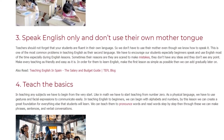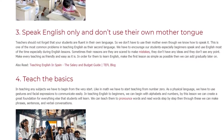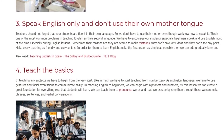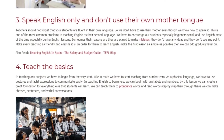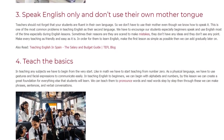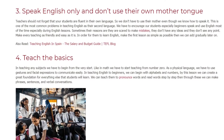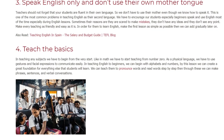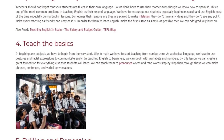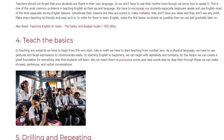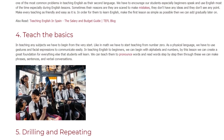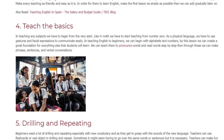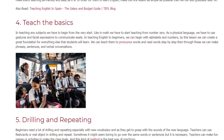Tip 4: Teach The Basics. In teaching any subject, we have to begin from the very start — like in math, we have to start from number zero. As a physical language, we have to use gestures and facial expressions to communicate easily. In teaching English to beginners, we can begin with alphabets and numbers. By this lesson, we can create a great foundation for everything else that students will learn. We can teach them to pronounce words and read words step by step, and through these build phrases, sentences, and verbal conversations.